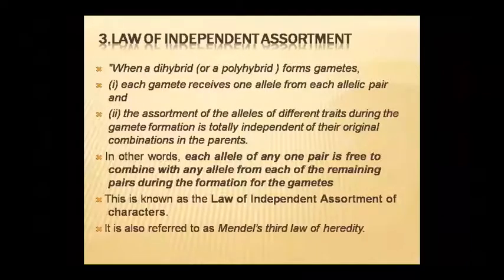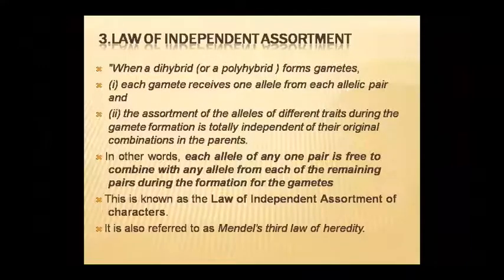The third law — Law of Independent Assortment — is based on dihybrid cross. Each gamete receives one allele from each allele pair. The alleles of different traits assort independently when gametes are formed — they are independent of the original combination. For example, if parents had red flowers with tall plants and white flowers with dwarf plants, it is not necessary that offspring will always have the same combination — red can combine with tall or short independently.